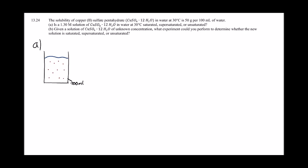Part A: is a 1.3 M solution of copper sulfate pentahydrate in water at 30 degrees Celsius saturated, supersaturated, or unsaturated? If 50 grams of copper sulfate pentahydrate are dissolved in 100 milliliters of water, the solution is saturated. If less than 50 grams are dissolved, it's unsaturated, and if more than 50 grams are dissolved, it is supersaturated.